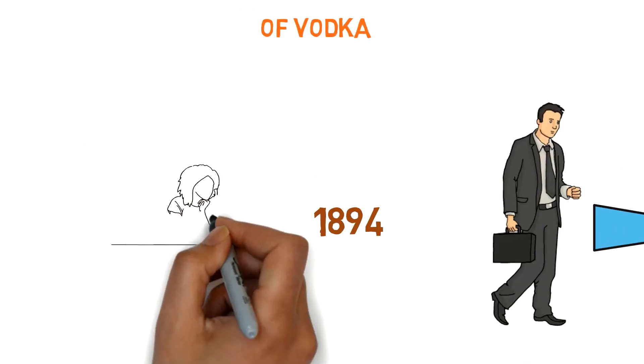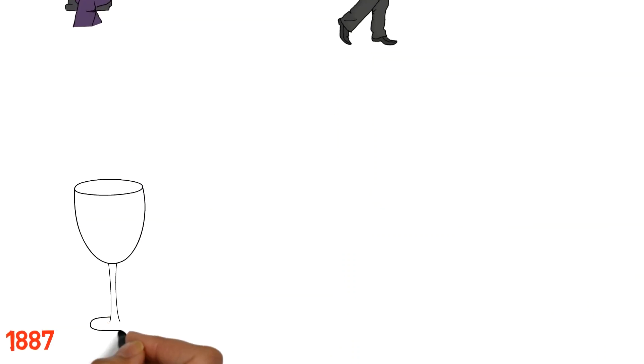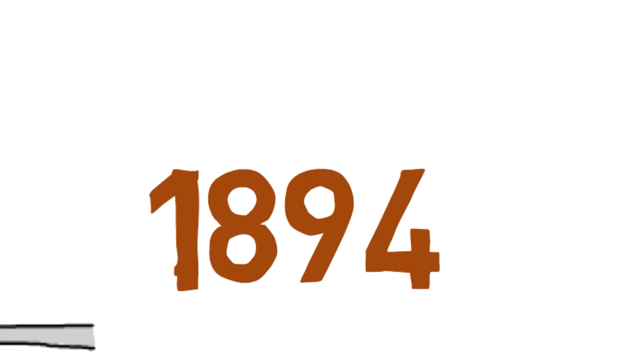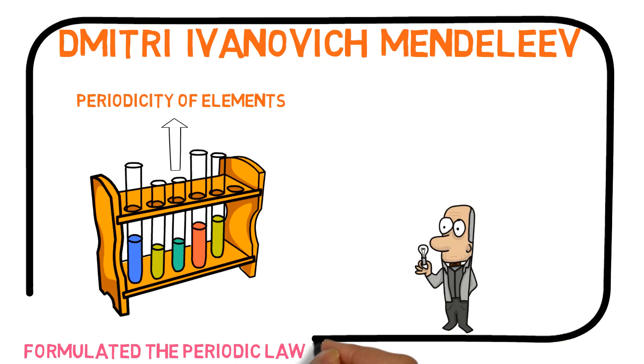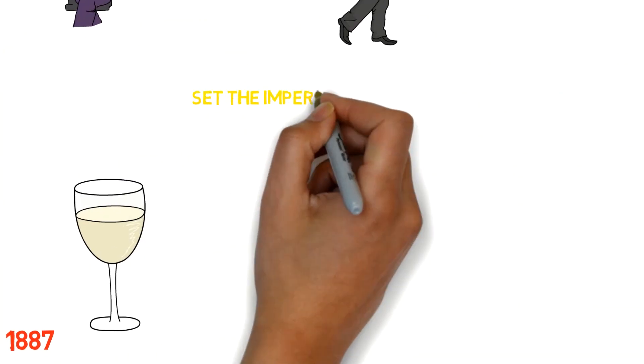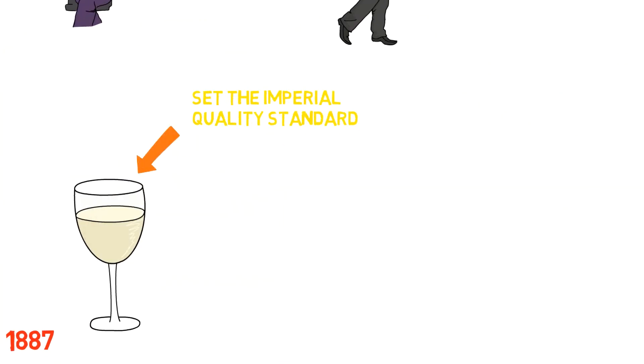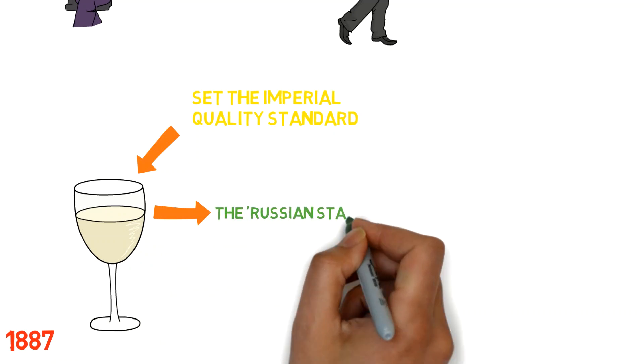This story has, for instance, been used in marketing claims by the Russian standard vodka brand that in 1894 Dmitry Mendeleev, the greatest scientist in all Russia, received the decree to set the imperial quality standard for Russian vodka, and the Russian standard was born.